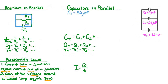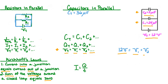Next, let's figure out what the potential difference is across each of our two capacitors, C1 and C2. For potential difference, we can use the equation Vt equals V1 equals V2, and so on for as many capacitors as we have in parallel. Plugging in the values from our diagram, we know that the potential difference of the battery is 12 volts. Therefore, the potential difference across capacitor 1, V1, is 12 volts, and the potential difference across capacitor 2, V2, is also 12 volts.